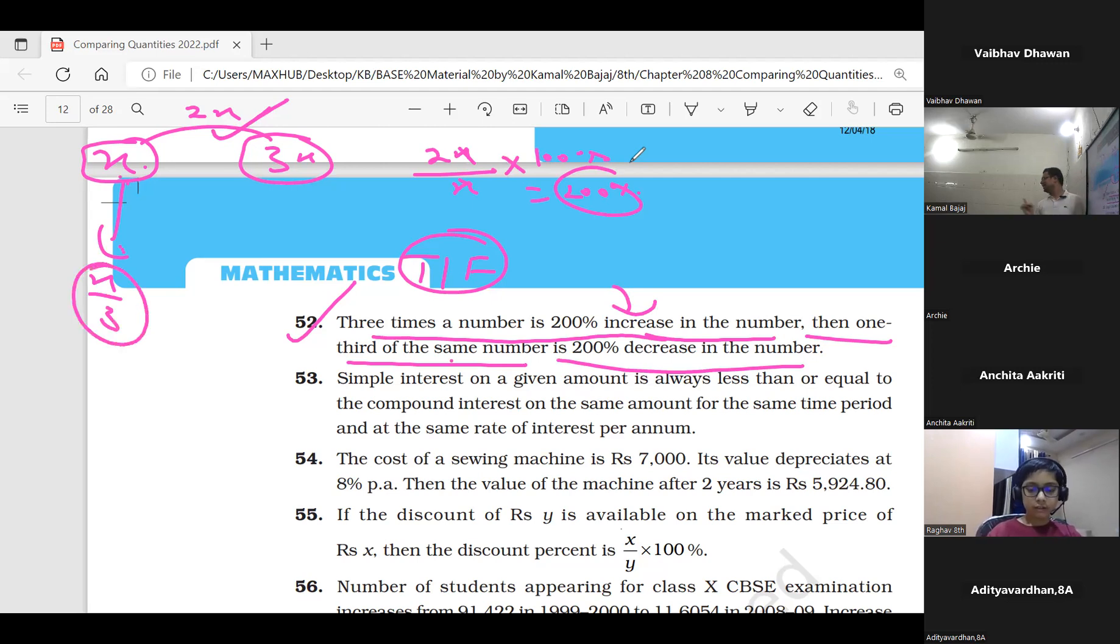The decrease will be x minus x/3, which equals 2x/3. This decrease is calculated relative to the original value x.